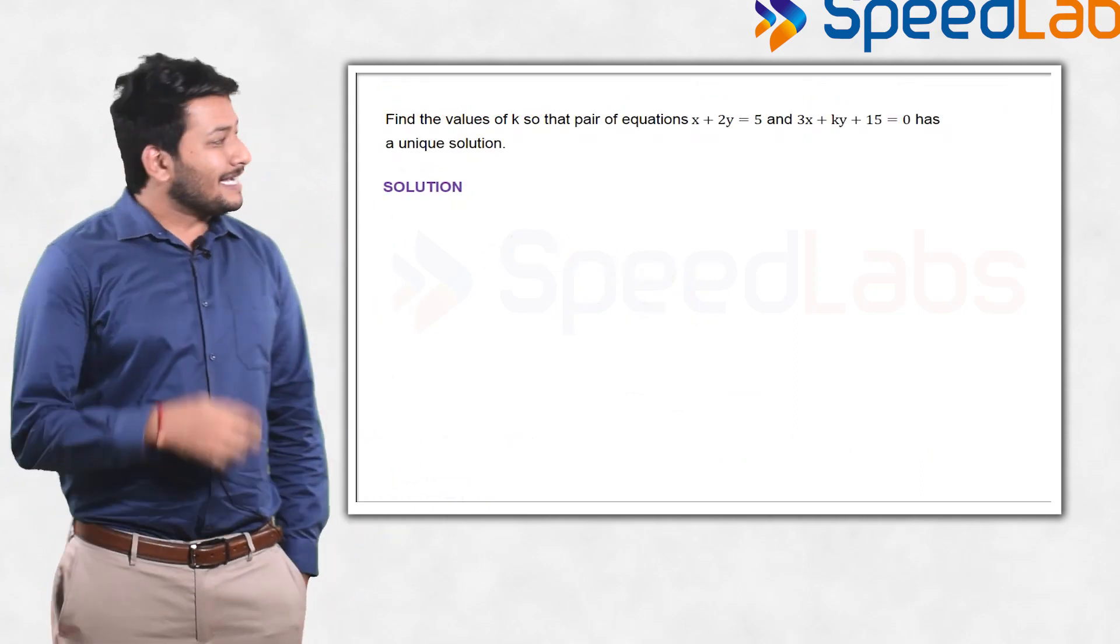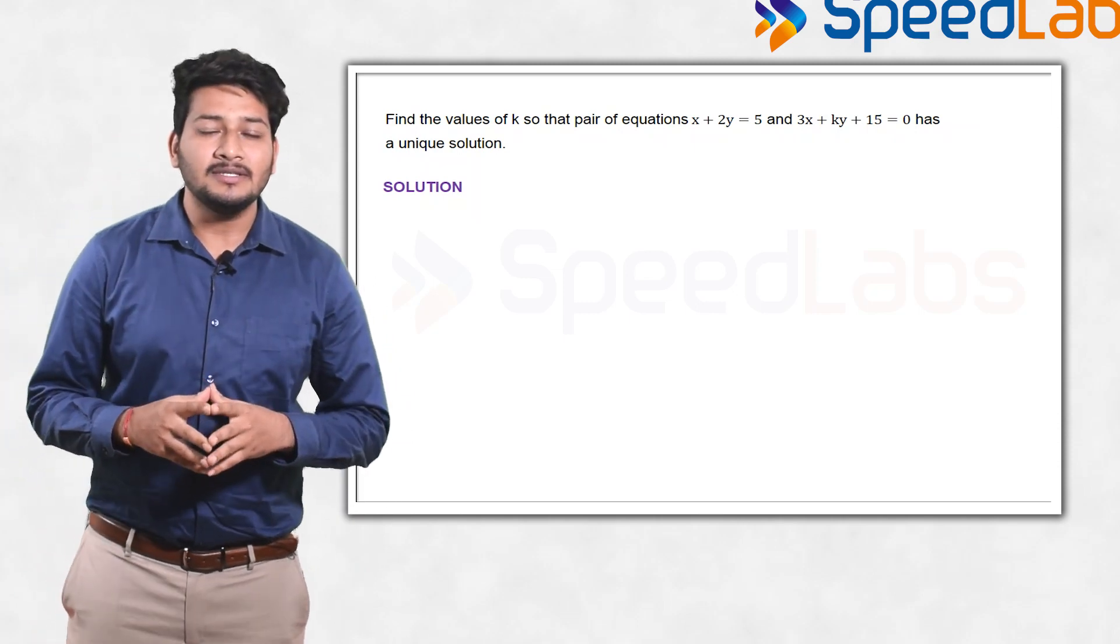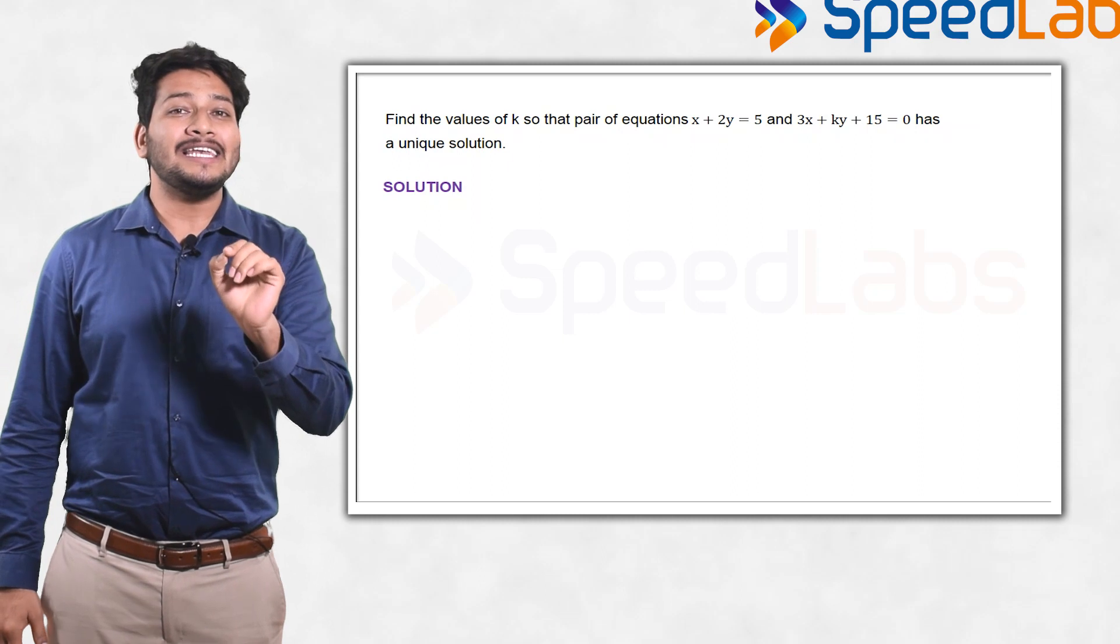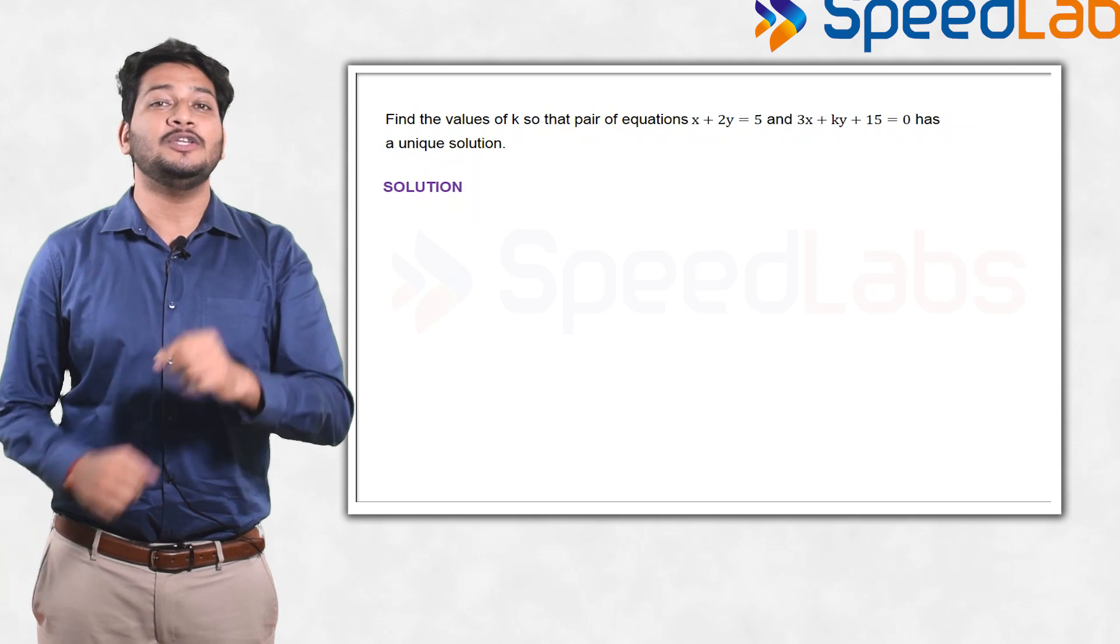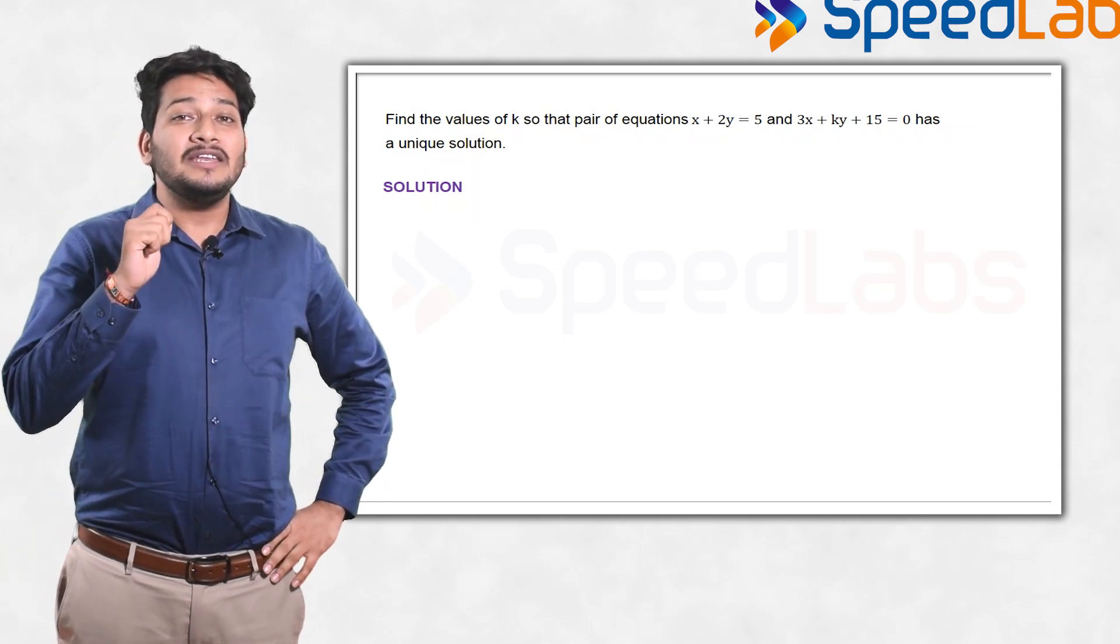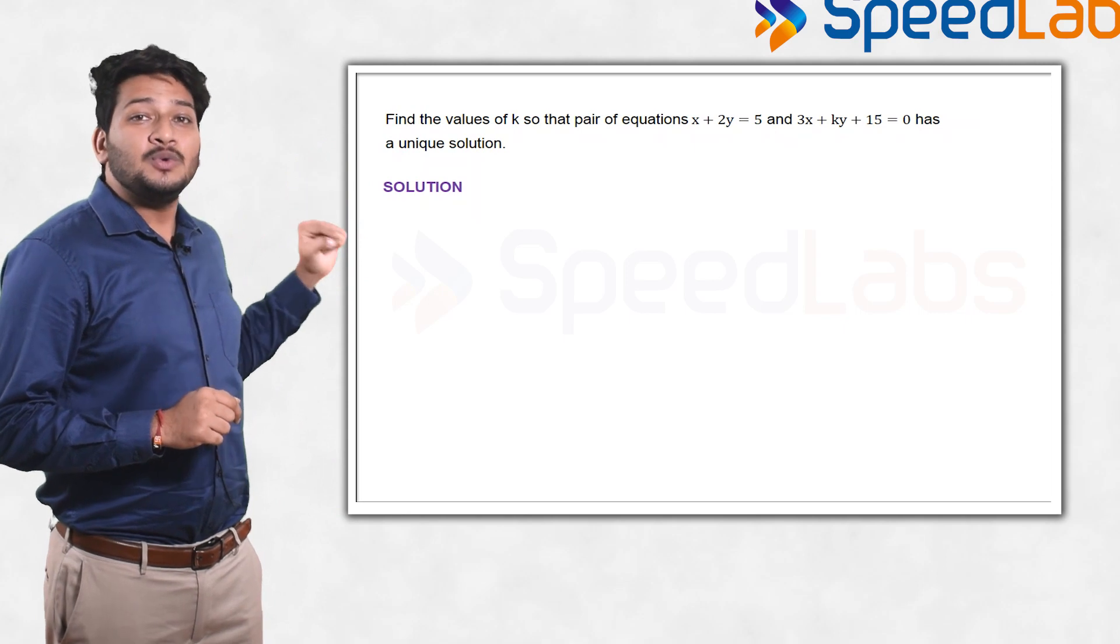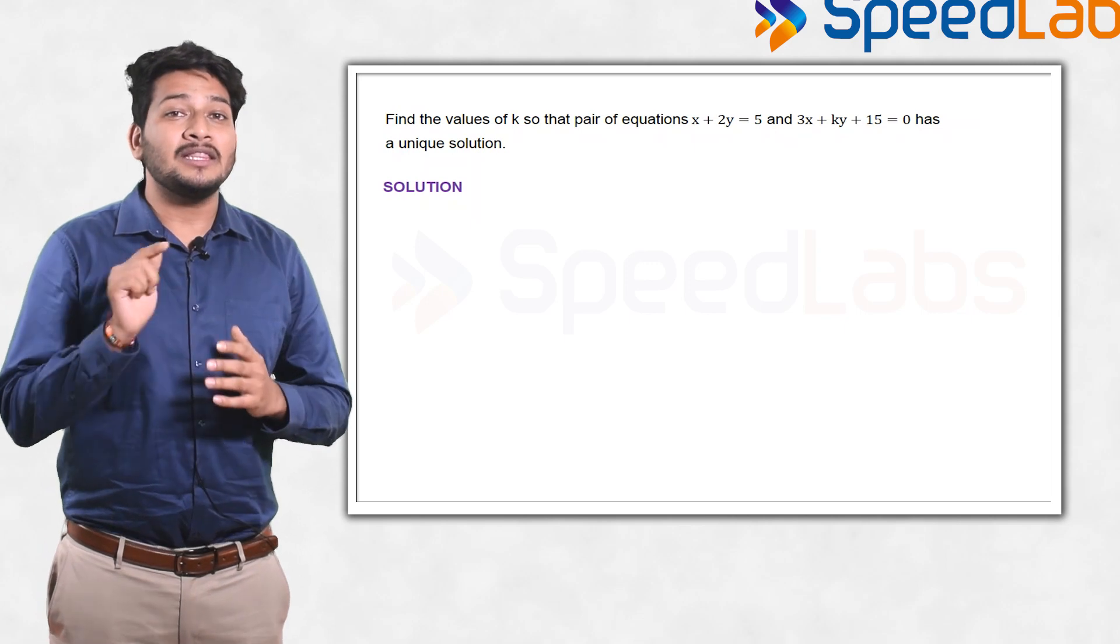The second problem which I am taking is based on linear equations. If you look at this problem, two equations are given to you in x and y, and you have to find the value of k for which these equations have only a unique solution. You must have studied the condition: if there are infinite solutions or no solution, then a₁/a₂ equals b₁/b₂. For a unique solution, a₁/a₂ should not be equal to b₁/b₂.